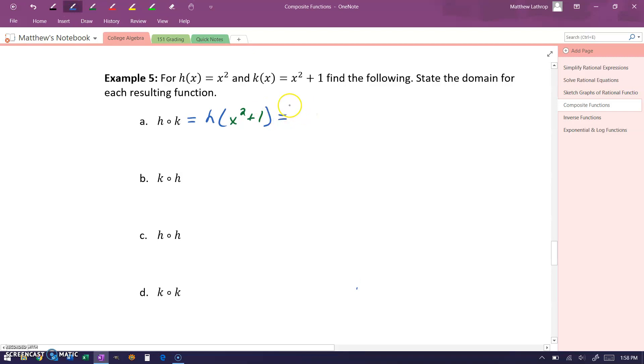So we'll take the quantity x squared plus one and substitute that into our function h of x everywhere we have an x, meaning we're going to be taking x squared plus one times itself, or x squared plus one times x squared plus one, which will give us x to the fourth plus two x squared plus one.